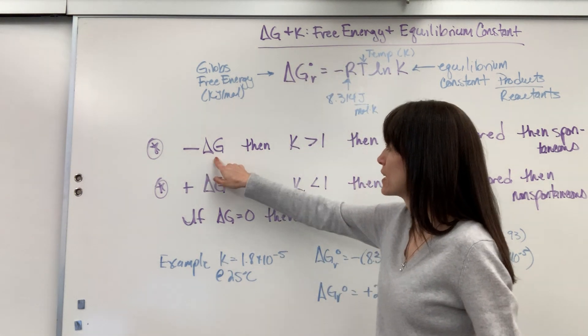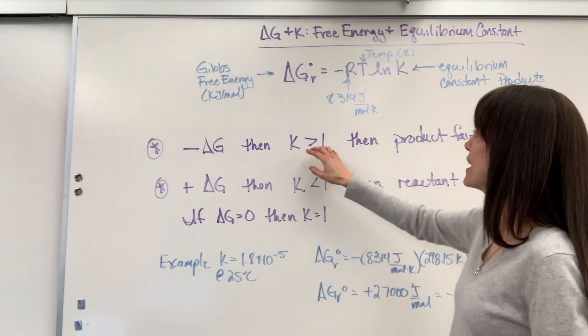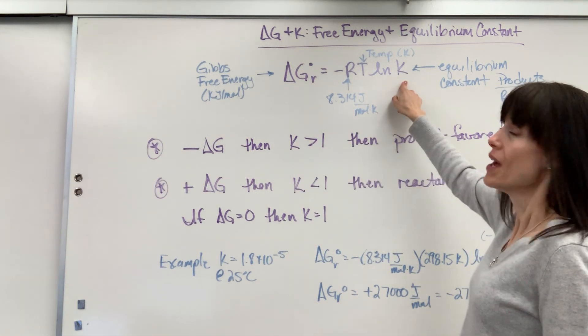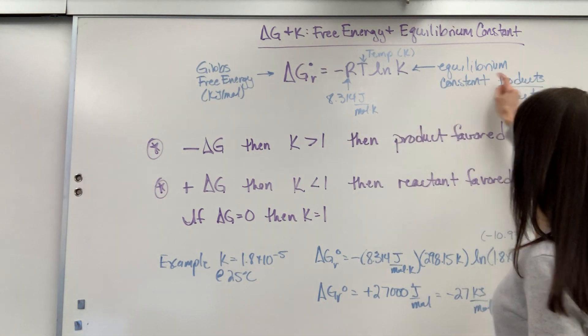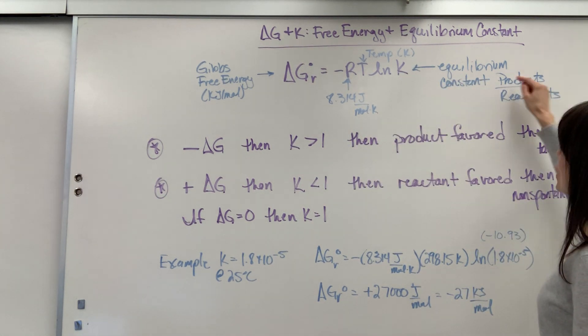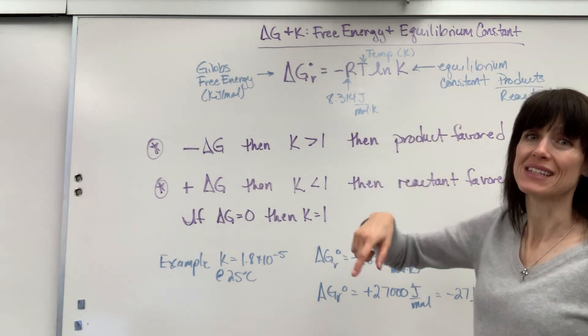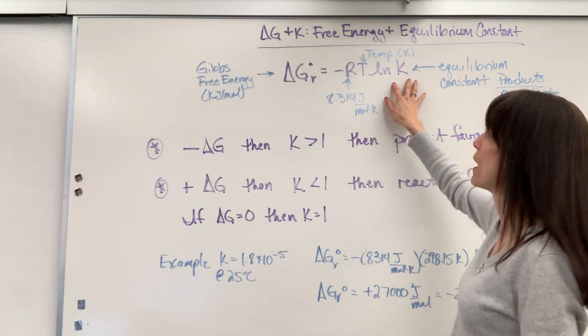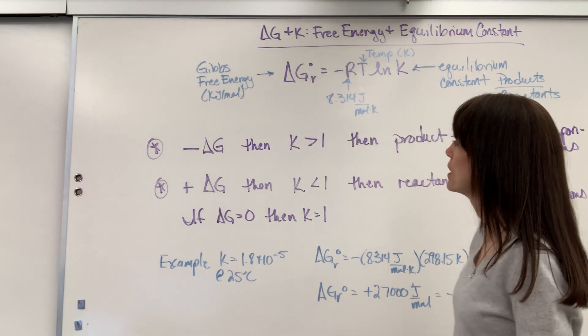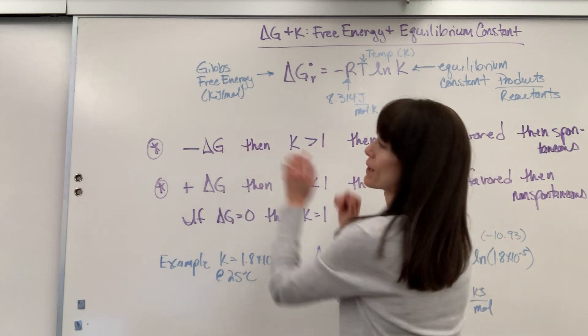So if we have negative delta G, that means K must be greater than 1. Because if you have K greater than 1, products are greater than reactants. When you have a number greater than 1, natural log greater than 1 is going to give you a positive value. Positive times negative gives you a negative. So memorize that.